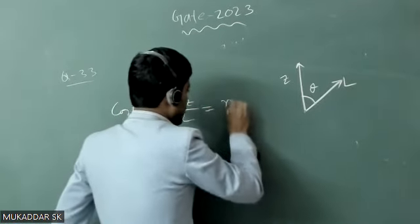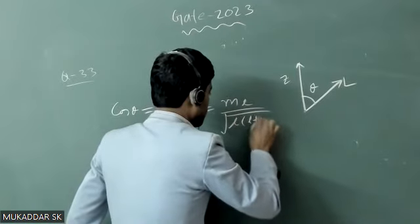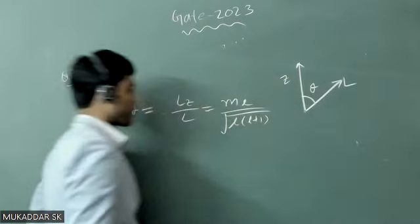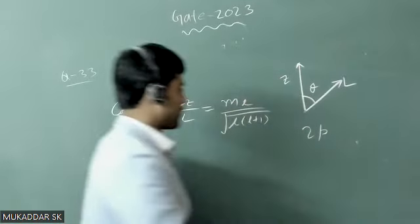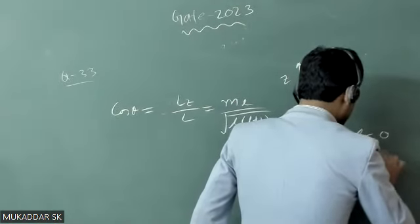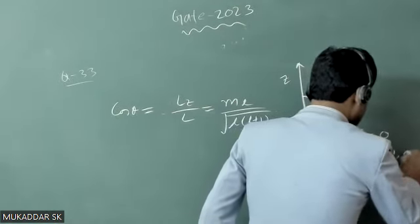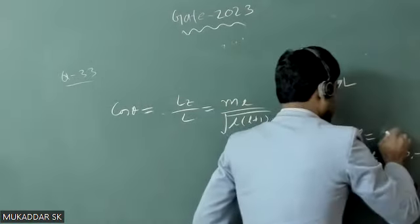For a 2p electron, L equals 1, and ml can take values 1, 0, or minus 1.